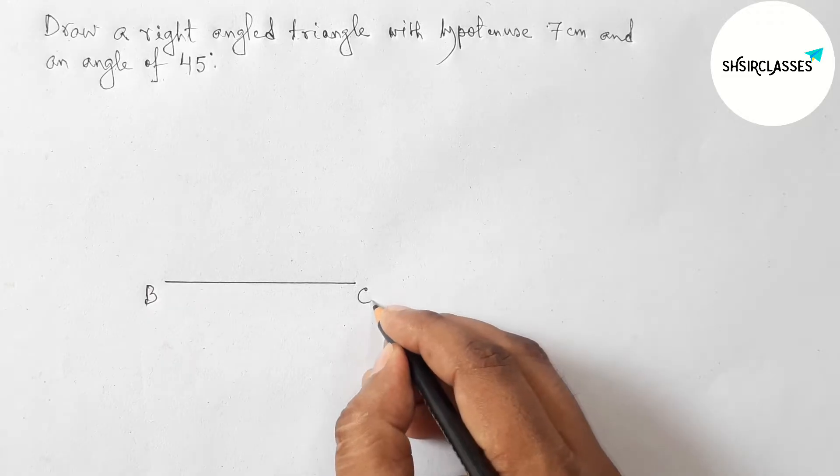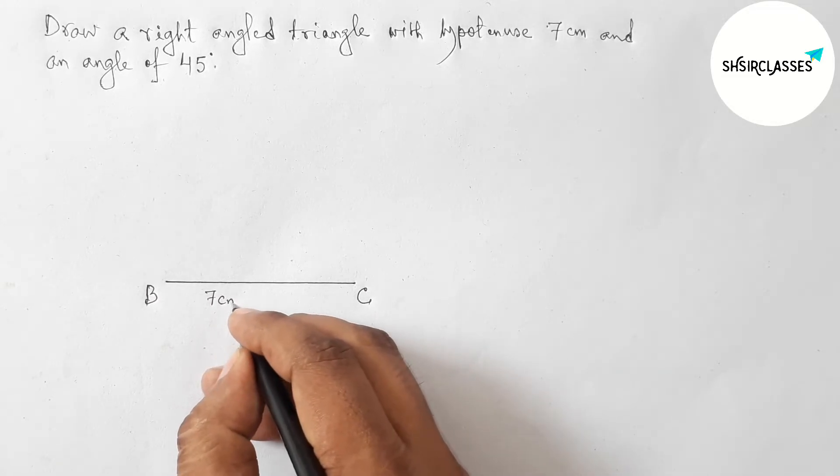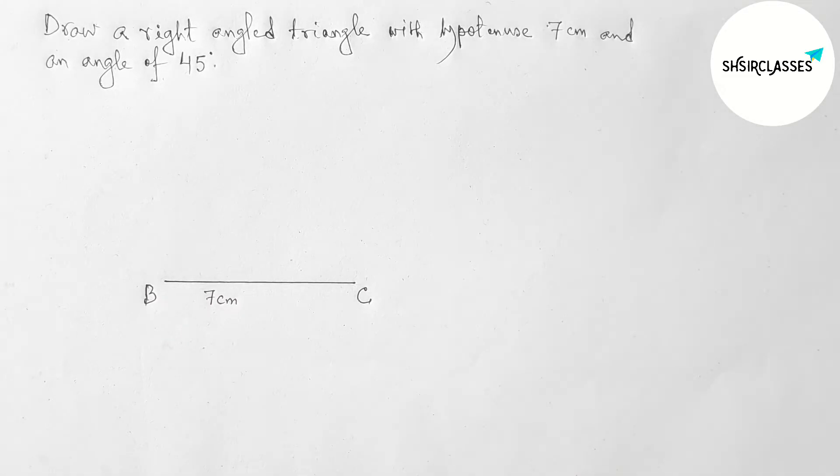So this is a 7 centimeter line segment. Now labeling here point B and here C. So this is 7 centimeter line segment.